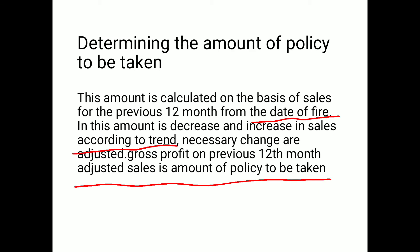Sales of the 12 months just before the date of fire, adjusted for the trend of increase or decrease, gives the adjusted sales amount. Adjusted sales multiplied by the rate of gross profit gives the policy amount to be taken.